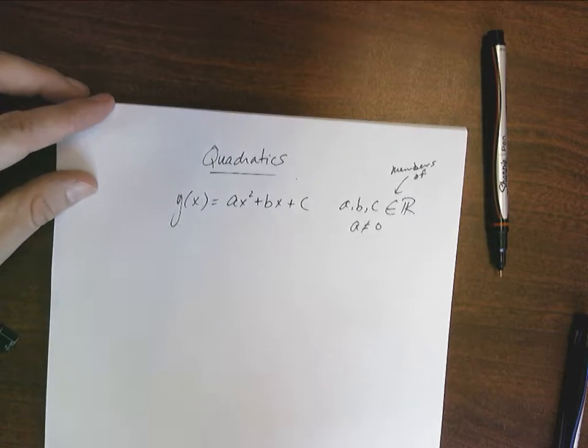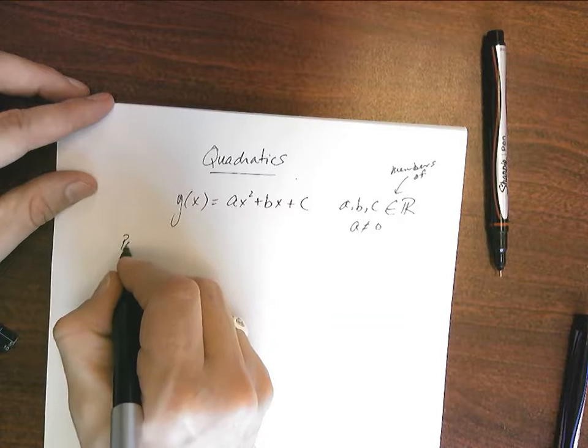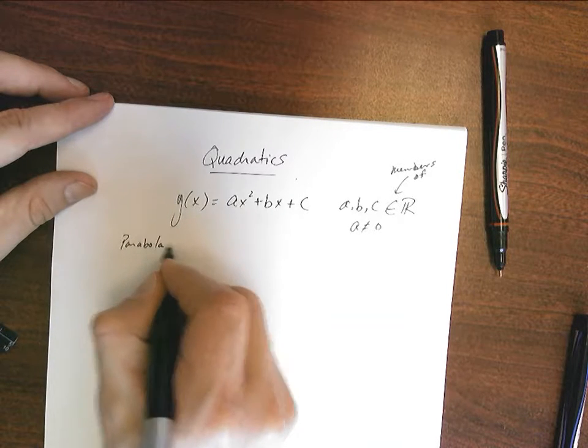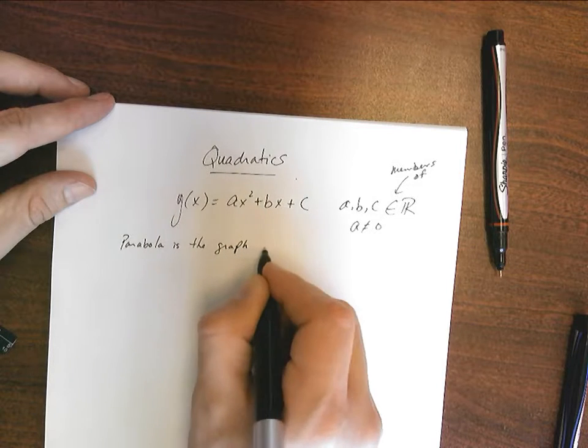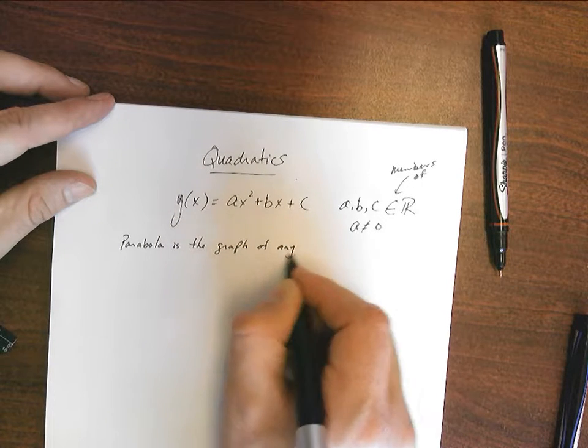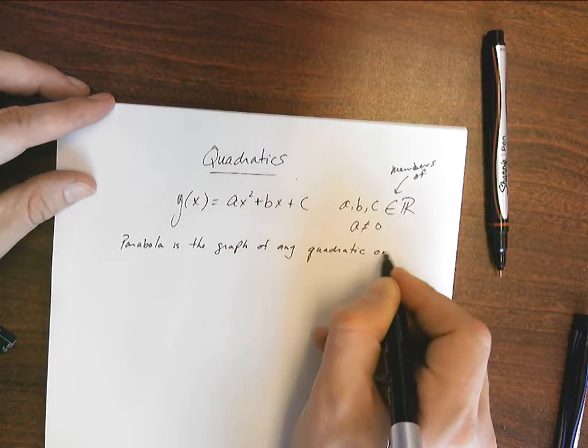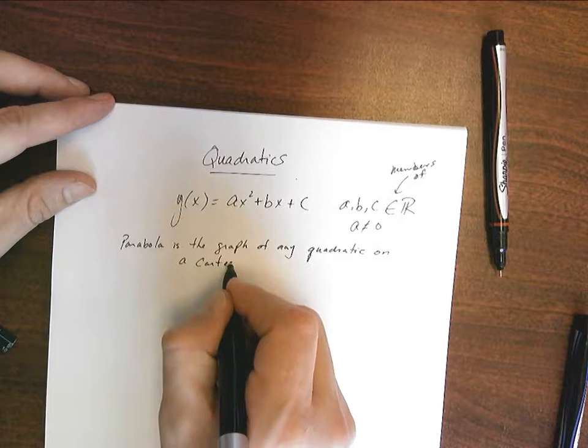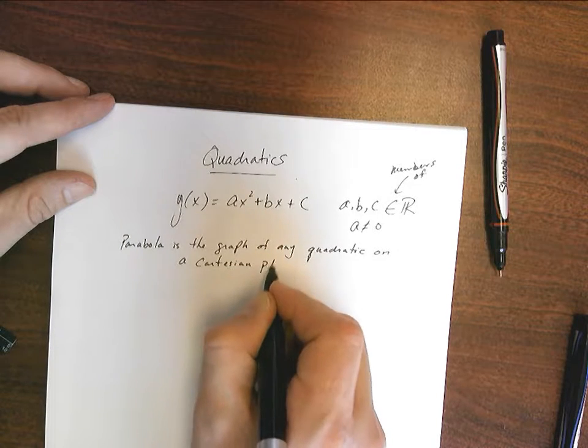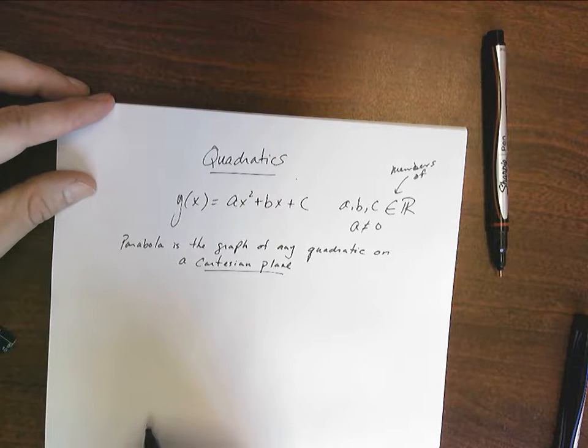Okay, so that's a quadratic. Now we talked about parabolas, and a parabola is the graph of any quadratic on, particularly, a Cartesian plane. That's what a parabola is.